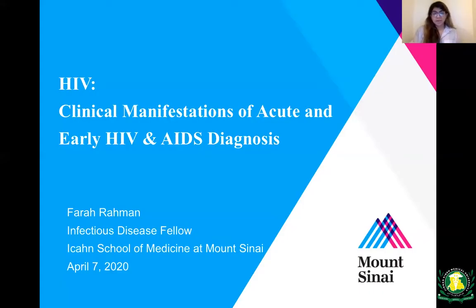This is Farah Rahman. I'm an infectious disease fellow at Eichen School of Medicine at Mount Sinai in New York. I'm giving the second part of my lecture series on HIV. This lecture is going to be on the clinical manifestations of acute and early HIV and AIDS diagnosis.